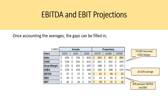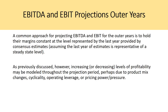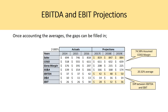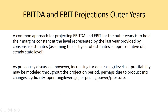A common approach for projecting EBITDA and EBIT for the outer years is to hold their margins constant at the level represented by the last year provided by consensus estimates — essentially you divide EBITDA and EBIT by sales to get those margins, then hold them constant or adjust slightly. For stable companies that works, but for growing companies you need to start projecting EBITDA as well. Increasing or decreasing profitability may be modeled throughout the projection period due to product mix changes, cyclicality, operating leverage, or pricing power.